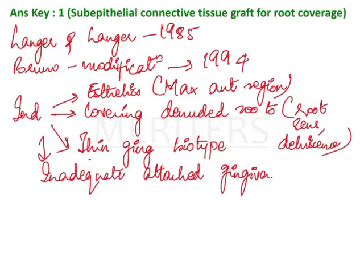The second indication is covering denuded roots — when you have root hypersensitivity, a dehiscence, or a fenestration causing root exposure, you can place a graft over there. A thin gingival biotype is another indication; as opposed to other places, the maxillary gingiva generally has a thick biotype. When you place the graft in a thin biotype area, the thickness of the gingiva increases.